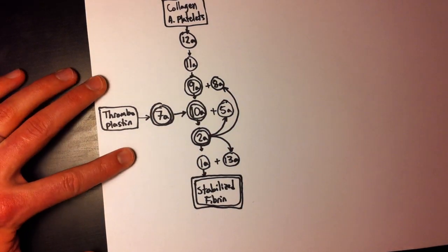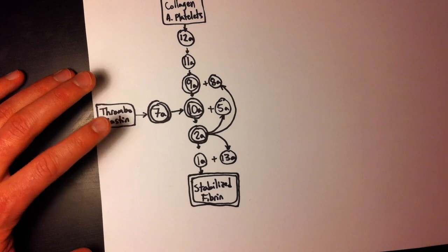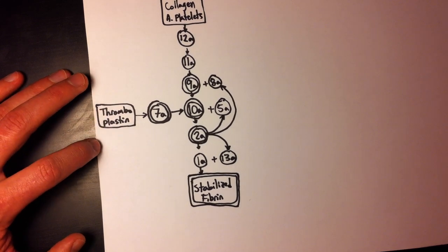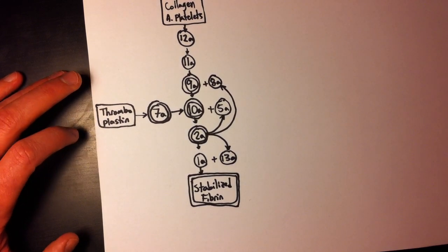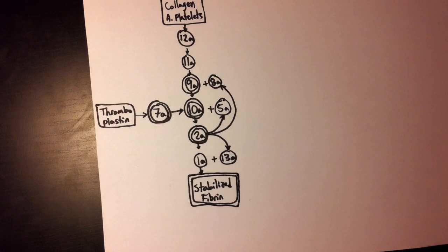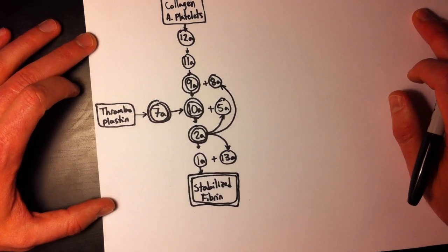These guys all, you might recognize them, they all require vitamin K in order to be produced in the liver, in order to produce that inactive form. So 7, in order to be produced in the liver, would require vitamin K. And that's pretty much it.